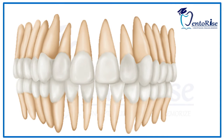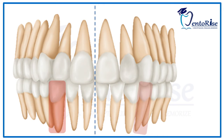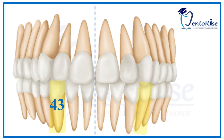The permanent mandibular canines are 2 in number, located as the 3rd tooth from the median line on the right and the left side. According to the FDI tooth notation system, the permanent right mandibular canine is numbered as 43 and the permanent left mandibular canine is numbered as 33.